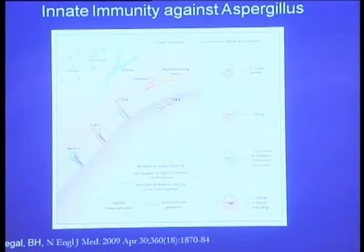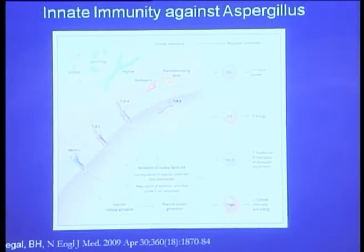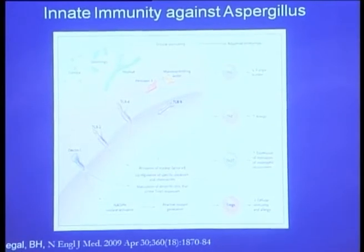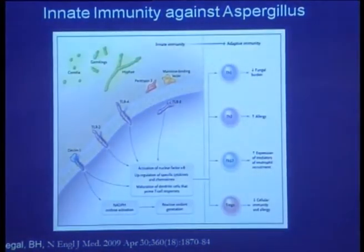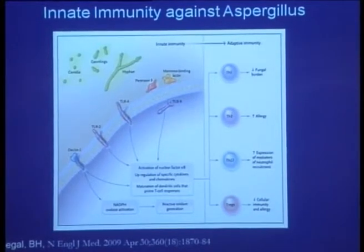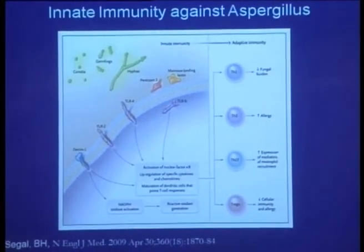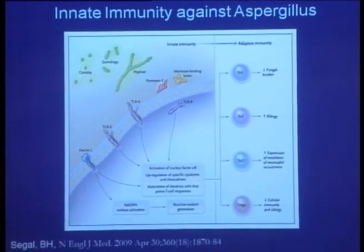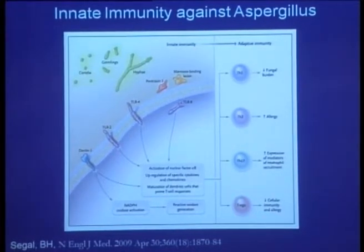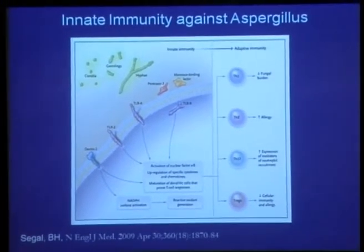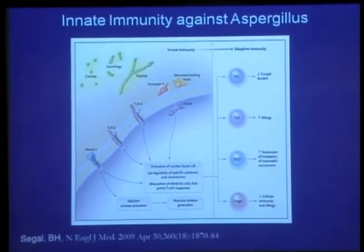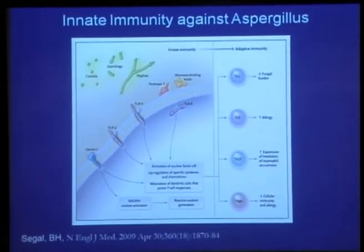In a review paper I wrote, I showed a cartoon of the different forms of the fungus. The spores are called conidia — that's the dormant stage. Then they start to grow a little bit; within about six or seven hours in a test tube they'll start to sprout, and we call those germlings. They then get bigger into the hyphal stage, which is what goes into tissue. Our immune system has the ability to sense microbial products displayed on the conidia, on the germlings, and on the hyphae.